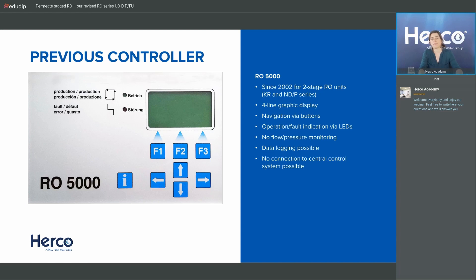A quick recap of the controllers: the previous RO 5000 controller was used for all two-stage units — the KR and NDP series. Last year we changed the KR series to a PLC (S7), and the NDP series — now called the P series — is being changed to two RO Digital controllers. It doesn't make sense to go for a PLC controller for a relatively small unit, as it would be too large a part of the total cost. For customized units, however, a PLC makes a lot of sense due to greater flexibility.